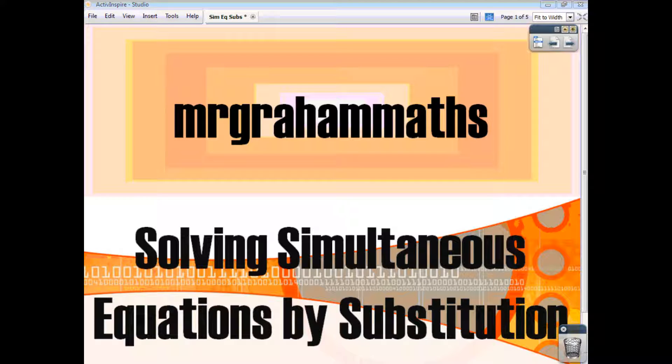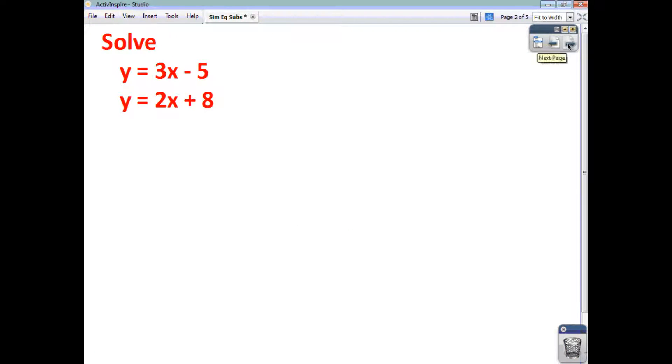In this video, we're going to have a look at how to solve simultaneous equations using a technique of substitution. Now, substitution just means putting one thing in place of another, and you would use this technique if at least one of your equations has a single letter subject. So let's have a look at an example here.